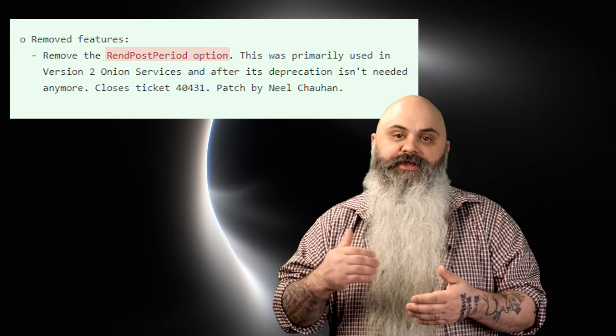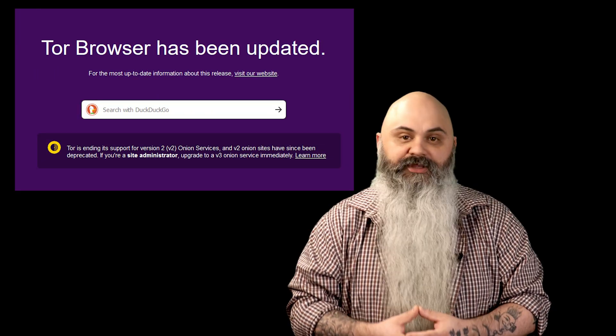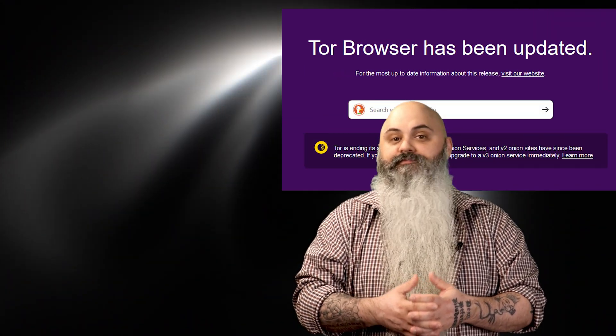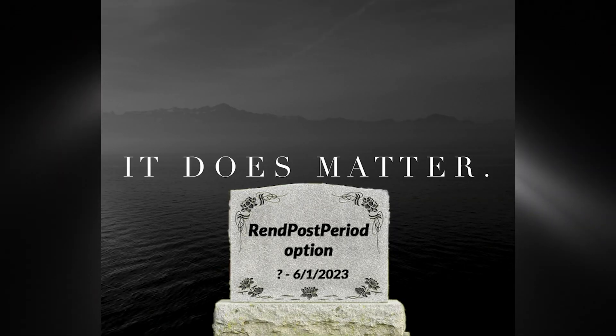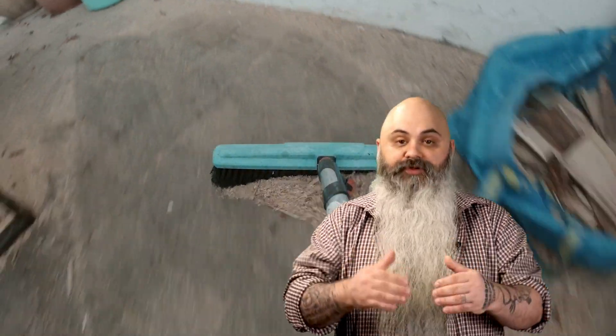First up, let's talk about the stuff that got the axe. At least two things were removed from Tor, and not to worry — they were obsolete anyway. The first was the rend_post_period option. This option was mainly used for version two of Onion Services, which are now deprecated. So this isn't a change you're actually going to notice. Removing this was just part of Tor's effort to clean up unnecessary clutter and streamline the software.